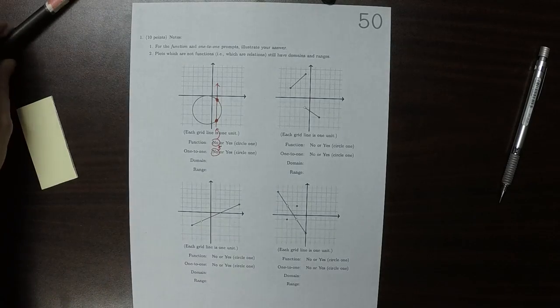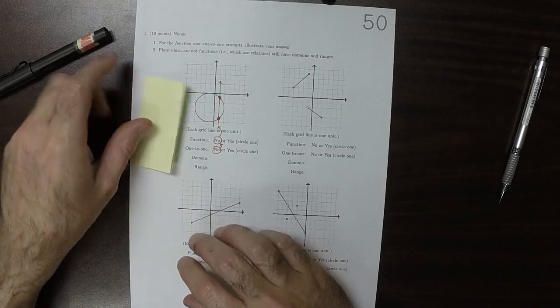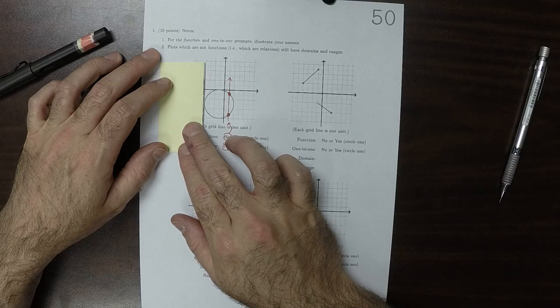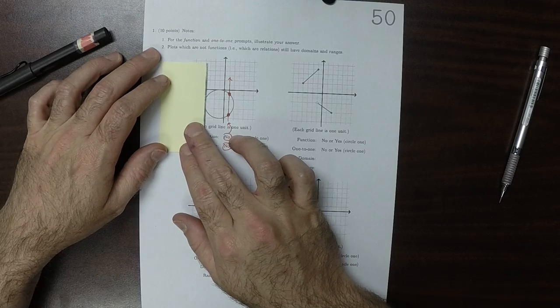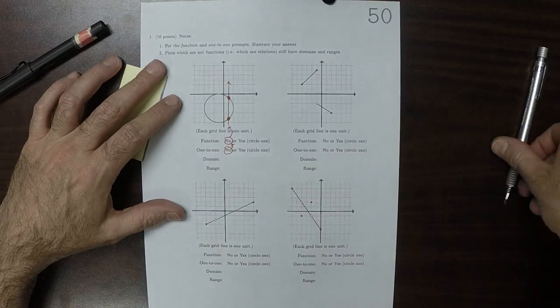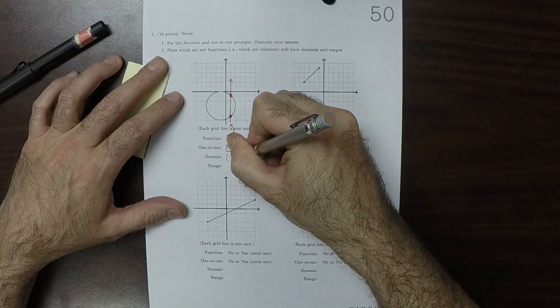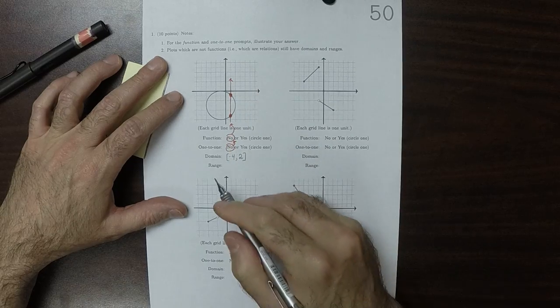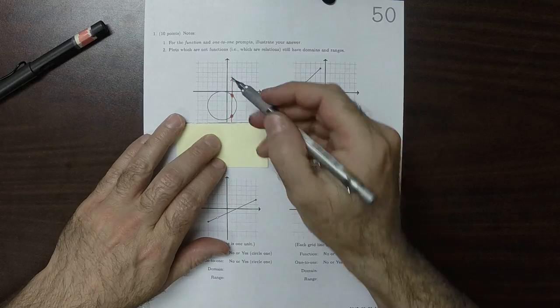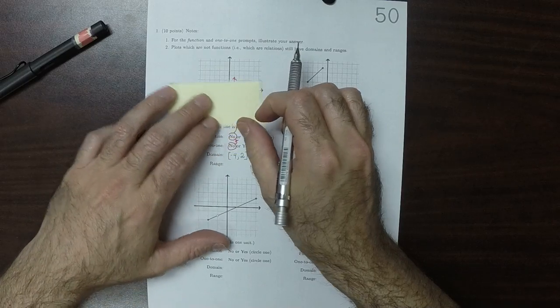Nevertheless, this relation still has a domain and range. So for the domain, the leftmost input is negative four all the way up to the rightmost input is two. So the domain is negative four to two. And the range is from negative one to negative six to zero.